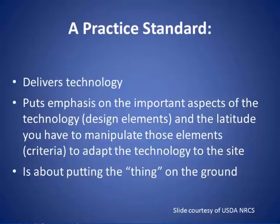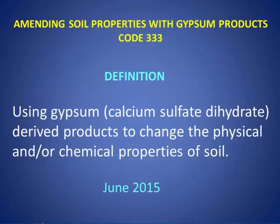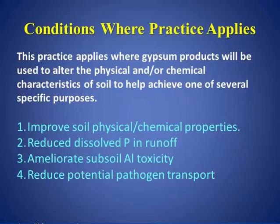It's the details of what they want to recommend for any particular practice. Recently, they have developed a standard for using gypsum products. The definition is using gypsum or calcium sulfate dihydrate derived products to change the physical and/or chemical properties of soil. With this practice, there are four main things covered — recommendations on how to use gypsum as a soil amendment.